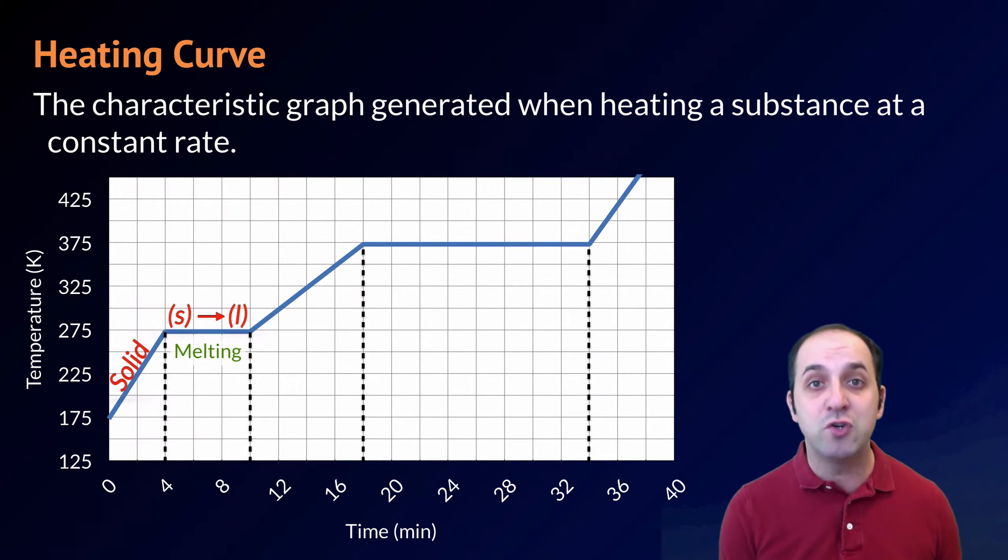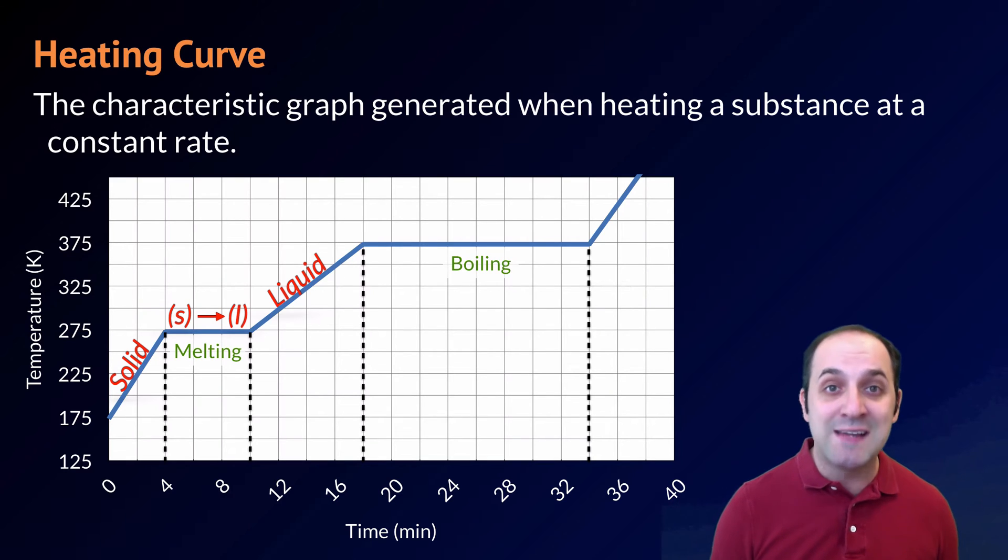Once we're done melting our substance, as we continue to put heat in, our temperature is going to continue to increase. At that point, the substance is entirely a liquid. But again, at some point we're going to hit that flat line. That's where we go through the boiling process, which is of course the liquid to gas transition.